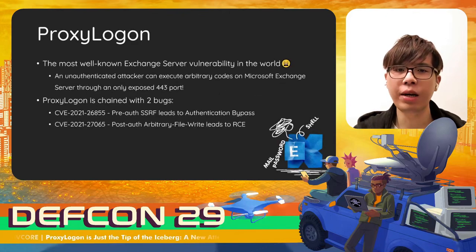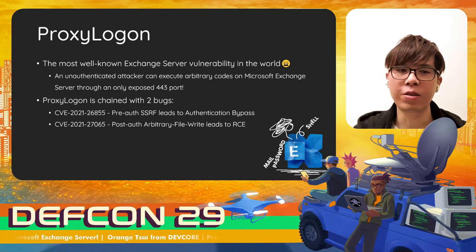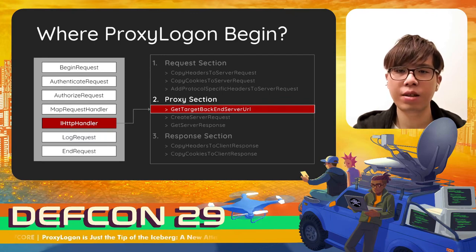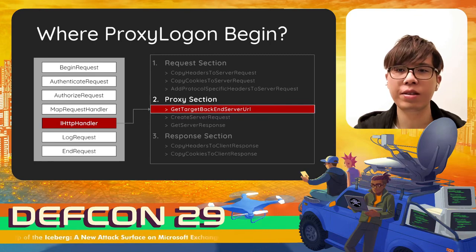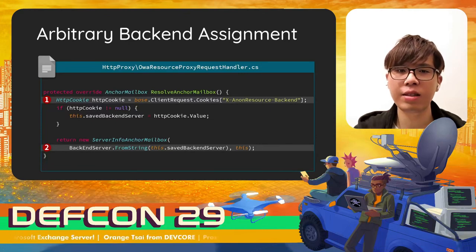Okay, the first exploit is ProxyLogon. As introduced before, this may be the most severe vulnerability in Exchange history. ProxyLogon is chained with two bugs to get RCE: one is an SSRF on the frontend, and the other is an arbitrary file write on the control panel of the backend. The bug is mainly located at the proxy section in the frontend. We mentioned that the frontend handler calculates the backend URL and forwards the request. One of the handlers is in charge of processing static resources, and it will assign the backend target from a cookie.